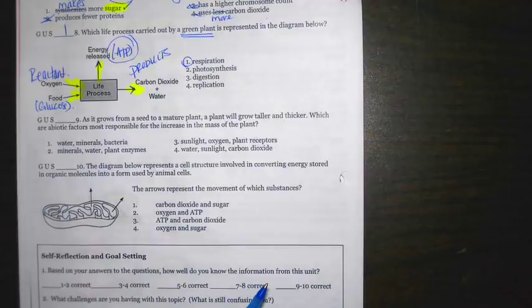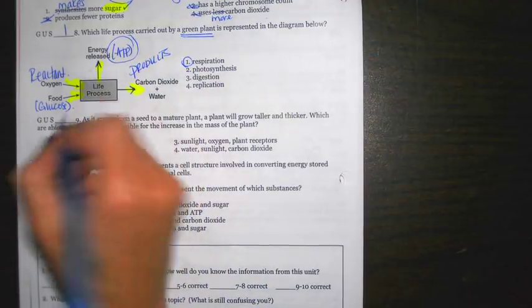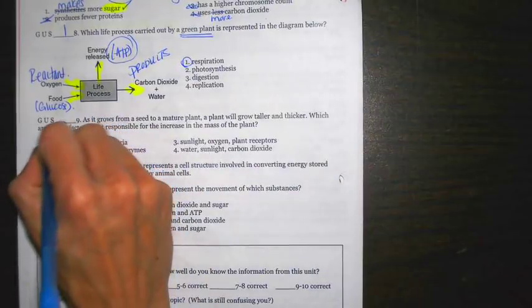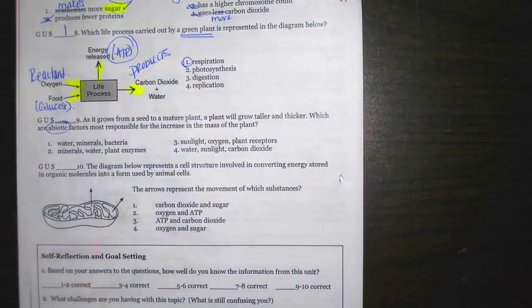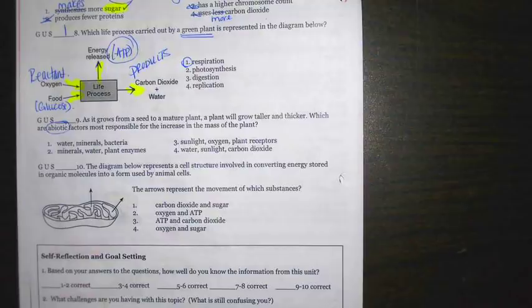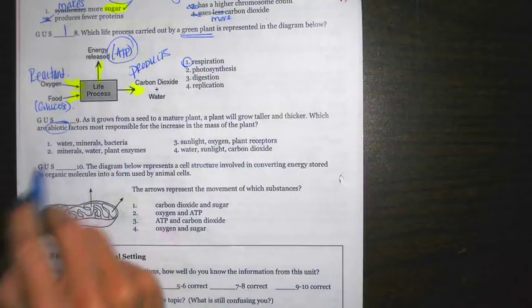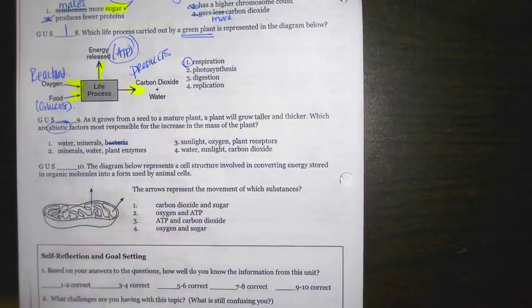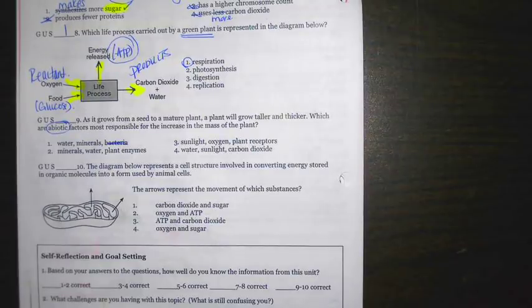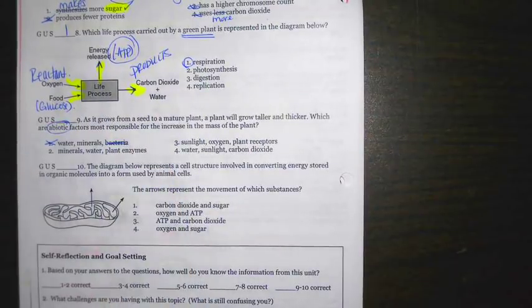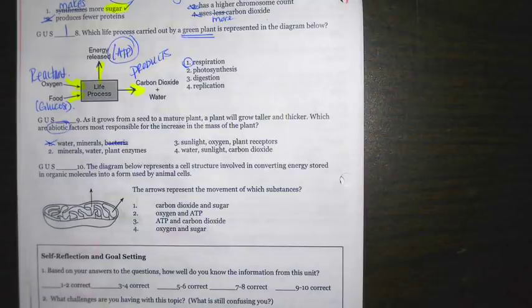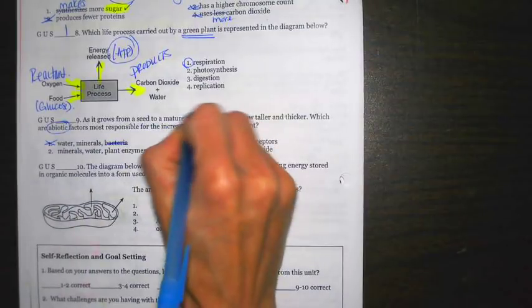As it grows from a seed to a mature plant, a plant will grow taller and thicker. Which abiotic factors are most responsible for the increase in mass? So first off, we have abiotic. Remember, abiotic means non-living. If I'm looking here at number one, it says water, minerals, bacteria. That's always a sticking point. People forget it, but bacteria are living. So because of that, that can't be it. Now we're looking at the rest of them. It's talking about a plant.